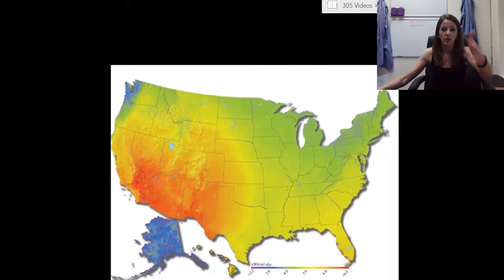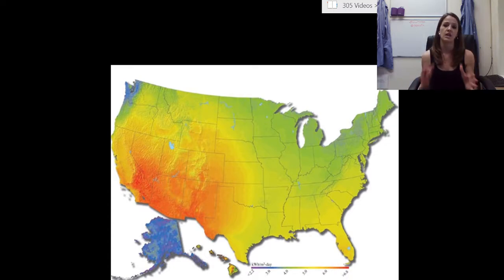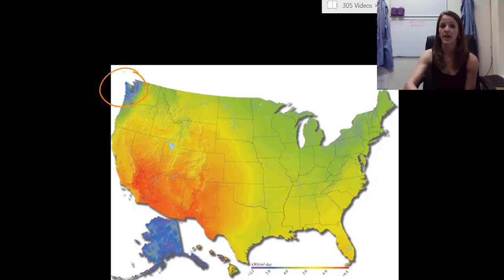And there actually is a pretty good reason why. So it turns out that if we look at a map of daily sunlight, this is a picture of the United States, and the red colors are showing the areas that have a lot of sunlight every single day, and the purple and dark colors are showing the places that have the least amount of sunlight every single day.